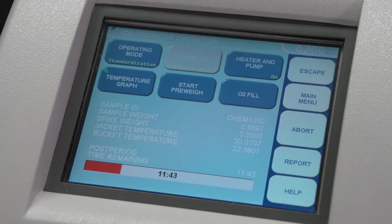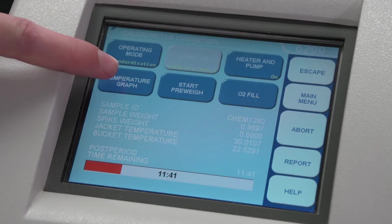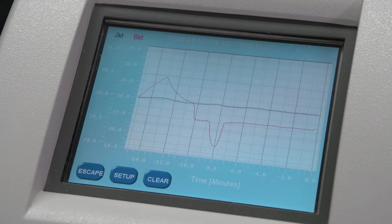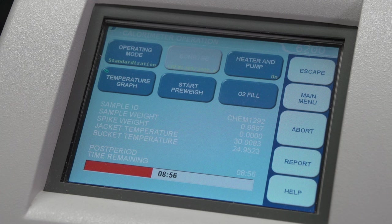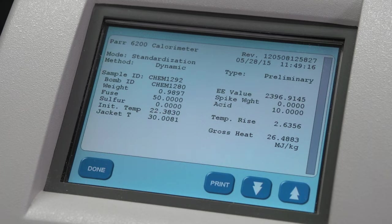Press the temperature graph button on the calorimeter display to observe the change in temperature. Press Escape to return to the calorimeter operation menu. When the test is complete, the instrument will beep briefly and display the test report. Record the temperature rise.